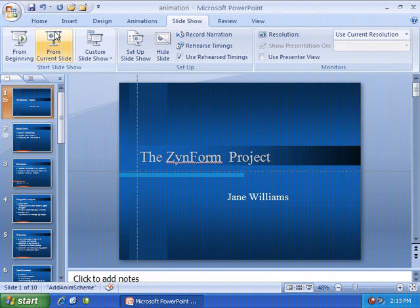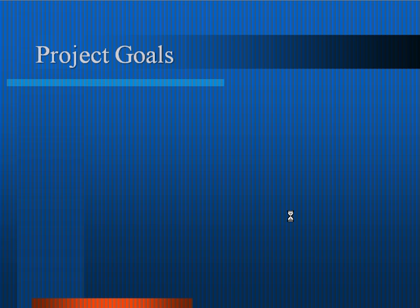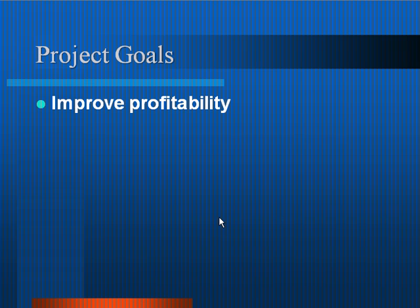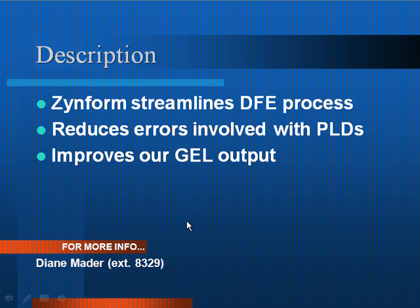Let's go over to the Slide Show tab and view the first two slides. With each click of the mouse, one of these will fade in. We'll transition to slide number two, and with each click we can bring in one more bullet point, slowly fading in. When we get to slide number three, it all comes in at once because there are no animation effects applied.